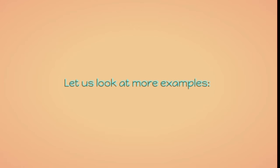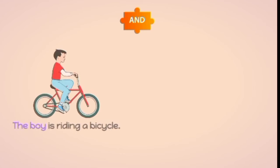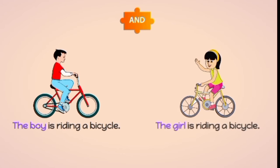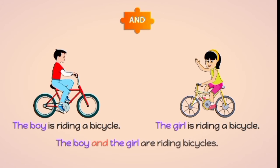Let us look at more examples. The boy is riding a bicycle. The girl is riding a bicycle. The boy AND the girl are riding bicycles.